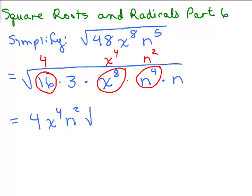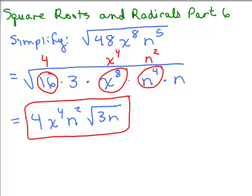So that gets multiplied out in front: 4x to the 4th n squared. What's left inside is a 3n. Now, using this method, what's important is that you do pick the largest perfect square factor of 48, which is 16 times 3. But if you don't, just make sure whatever you have left underneath the square root has no more factors that are perfect squares.